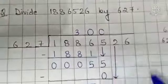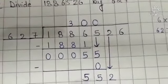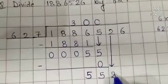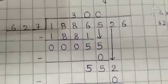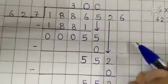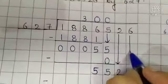627, 0's are 0. Subtract again. So 2 minus 0 is 2, 5 as it is, 5 as it is. Now bring down 6.